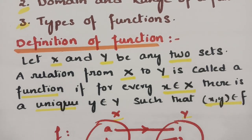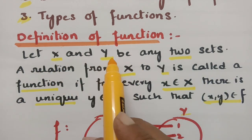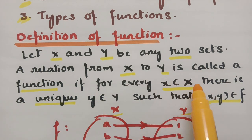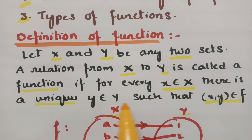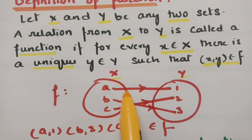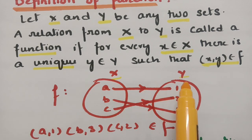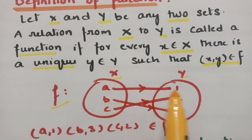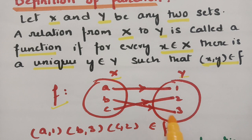What is the definition of a function? Let x and y be any two sets — x is one set and y is another set. A relation from x to y is called a function if every element in x has a unique relation with every element in set y, such that the ordered pair (x, y) belongs to f.